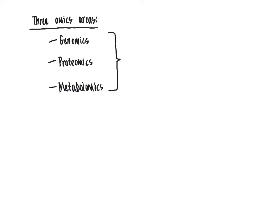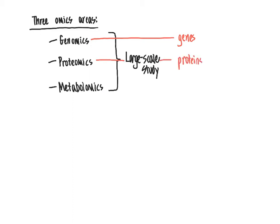What all of these have in common is that they are all going to be looking at the large-scale study — meaning not just looking at a handful of different genes, proteins, or metabolites, but looking simultaneously at many different ones. Genomics is the large-scale study of genes; proteomics is the large-scale study of proteins; and metabolomics is the large-scale study of metabolites. The common theme is the simultaneous study of many different genes, proteins, or metabolites.